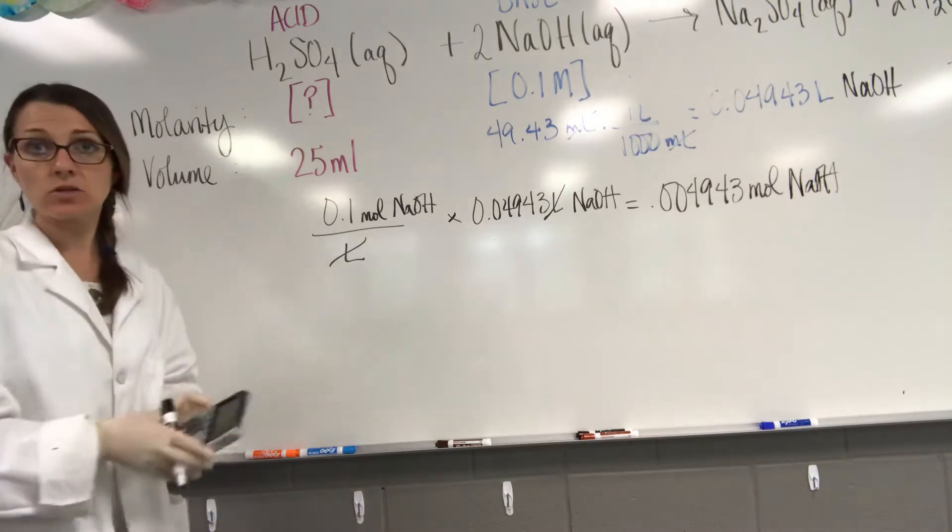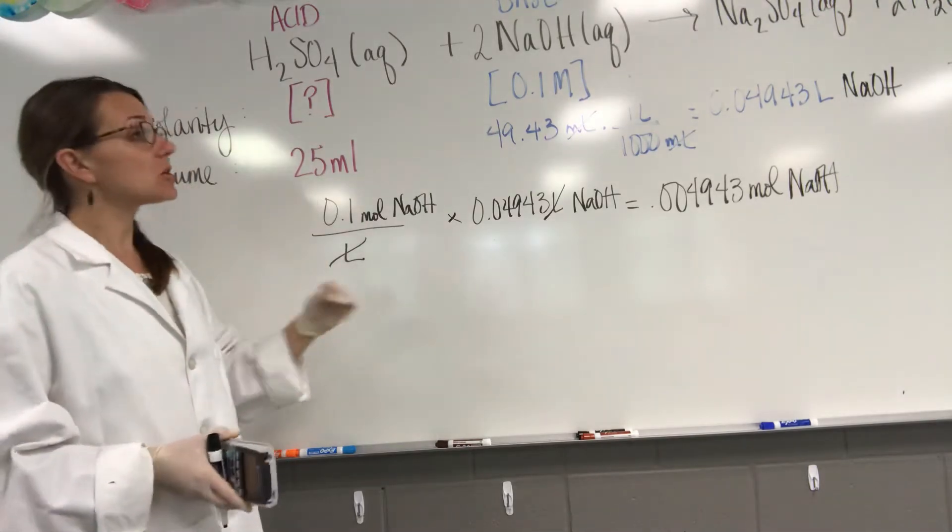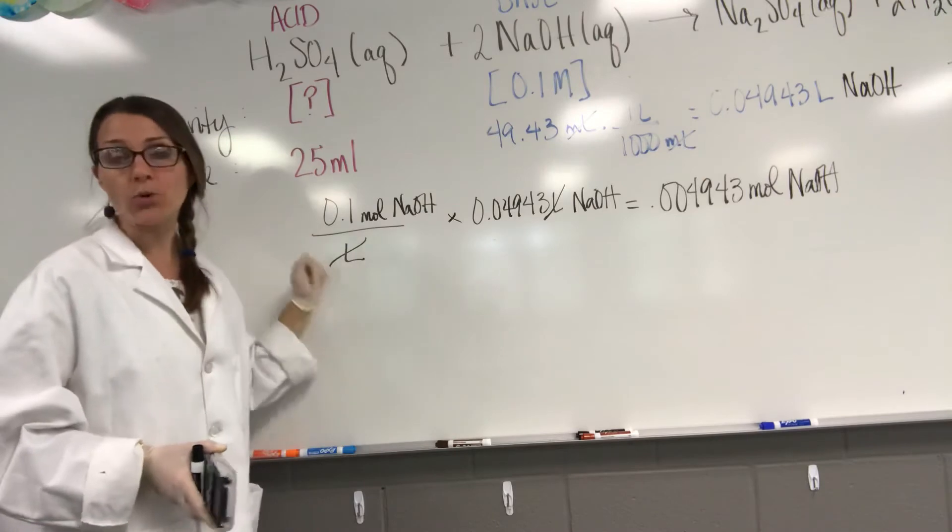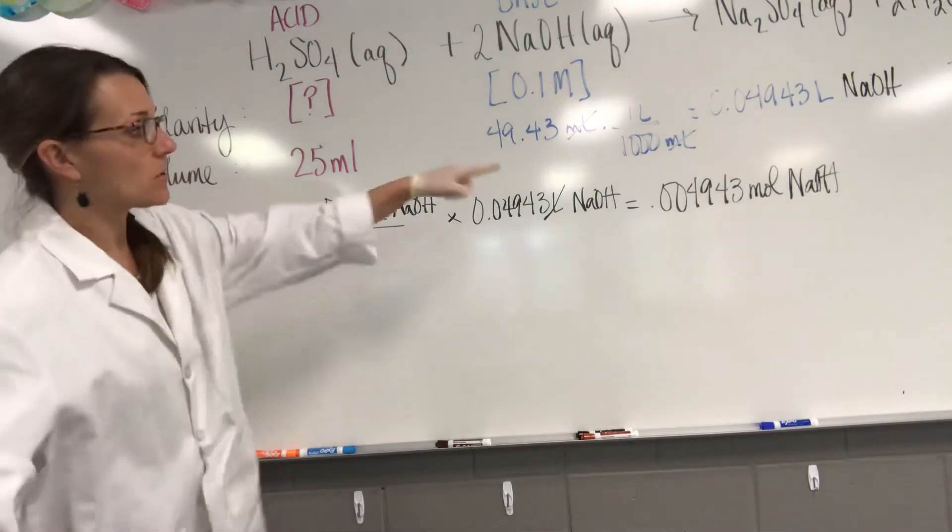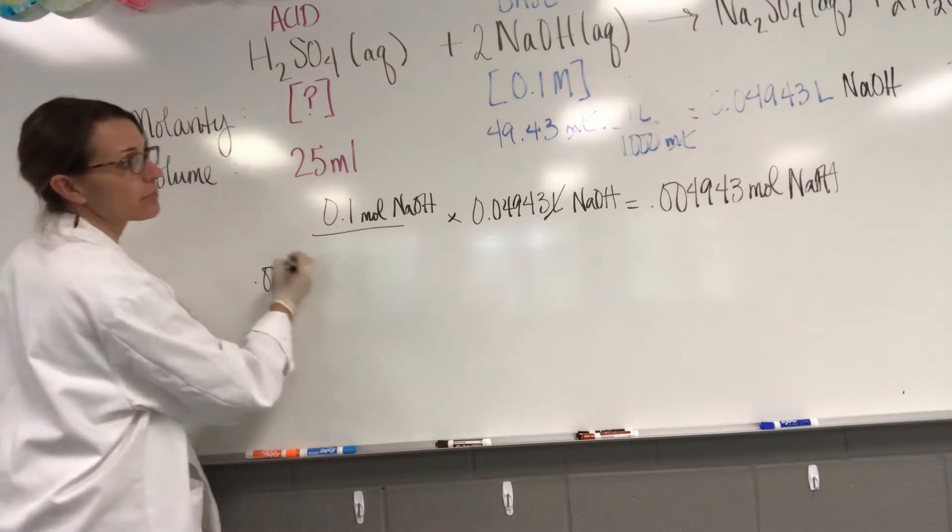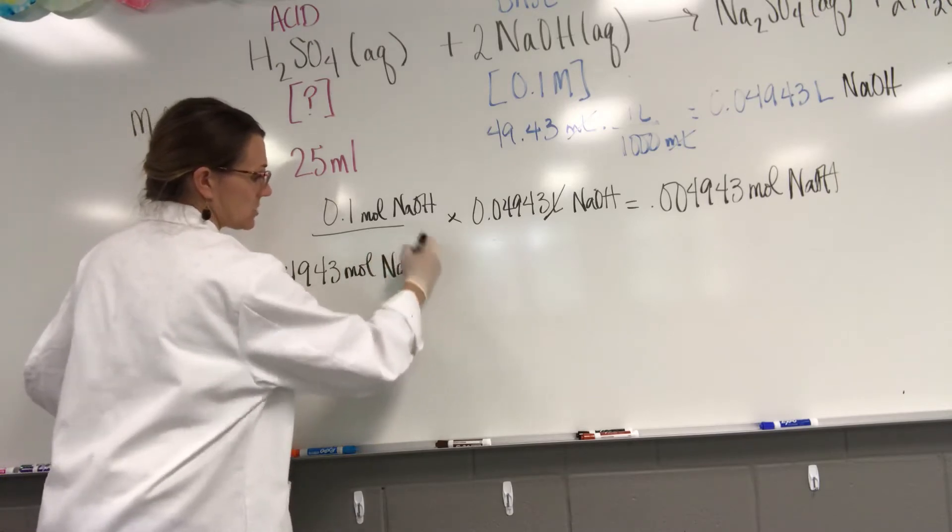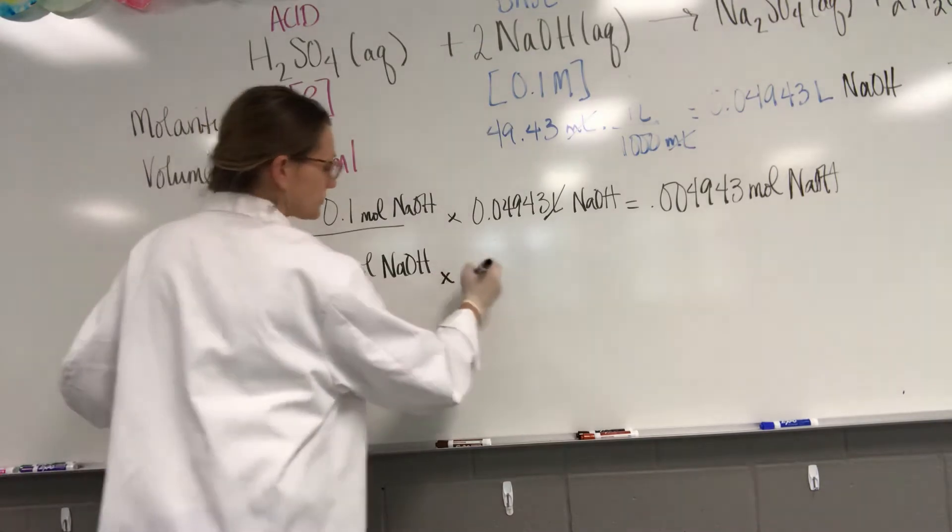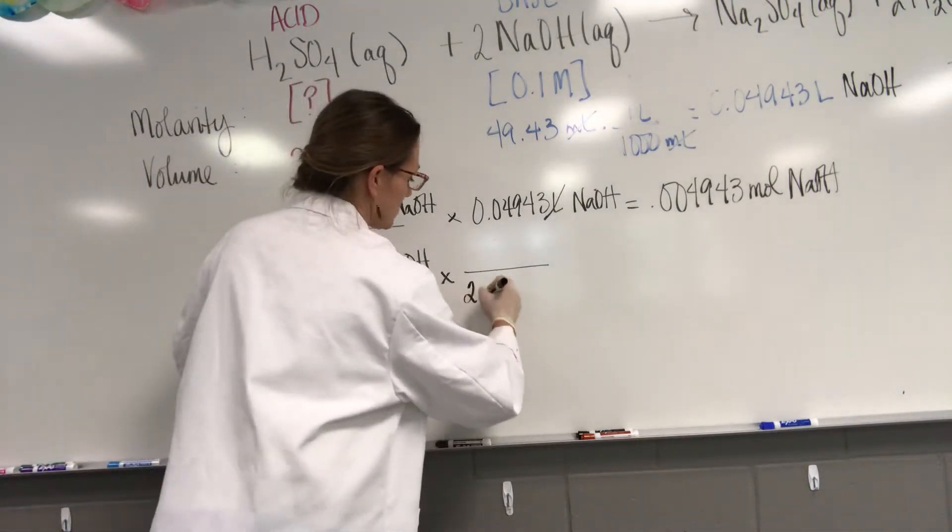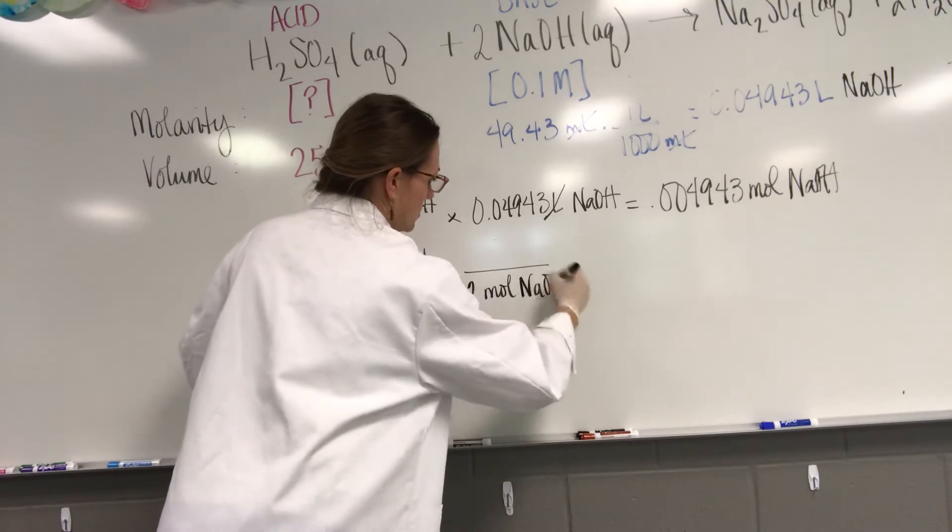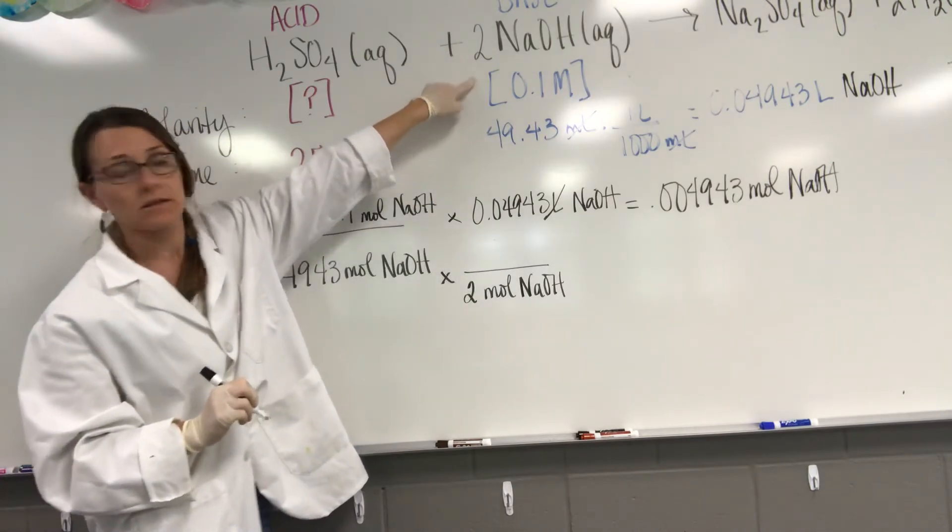Now what I'm going to do is I'm going to do some stoichiometry. I'm going to use the mole to mole ratio from the balanced chemical equation to go from moles of sodium hydroxide to moles of sulfuric acid. I'm going to just erase this just to give myself a little more space. So we ended with 0.004943 mol NaOH. Now we're going to multiply that by the stoichiometric ratio where we're going to put mole sodium hydroxide on the bottom.